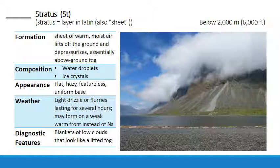Stratus means layer, and a stratus cloud usually has some sort of layered appearance, though if you're looking for a flat base you can sometimes be frustrated. They are very low-level clouds, forming well below 6,000 feet. These clouds are composed of water droplets — and maybe ice crystals depending on air temperature — and they form in a few different ways: when a sheet of warm moist air rises and cools adiabatically, when the temperature of the lower atmosphere decreases causing an increase in relative humidity, when morning fogs lift, or when cold air moves into a relatively warm region.